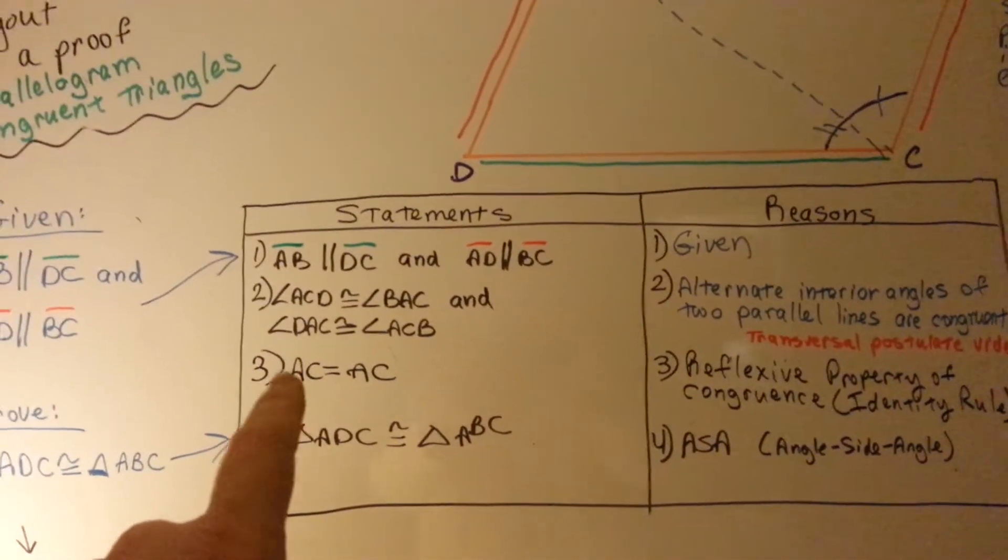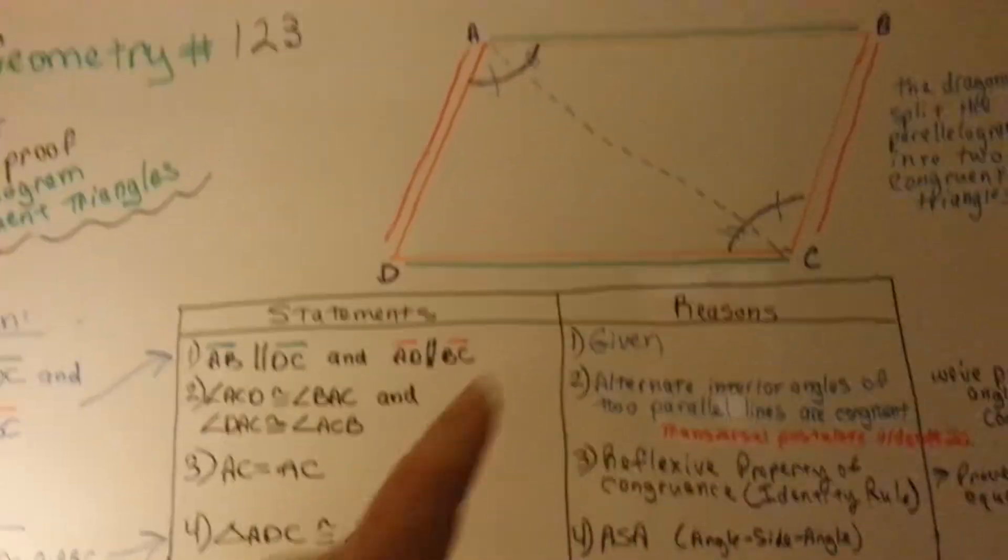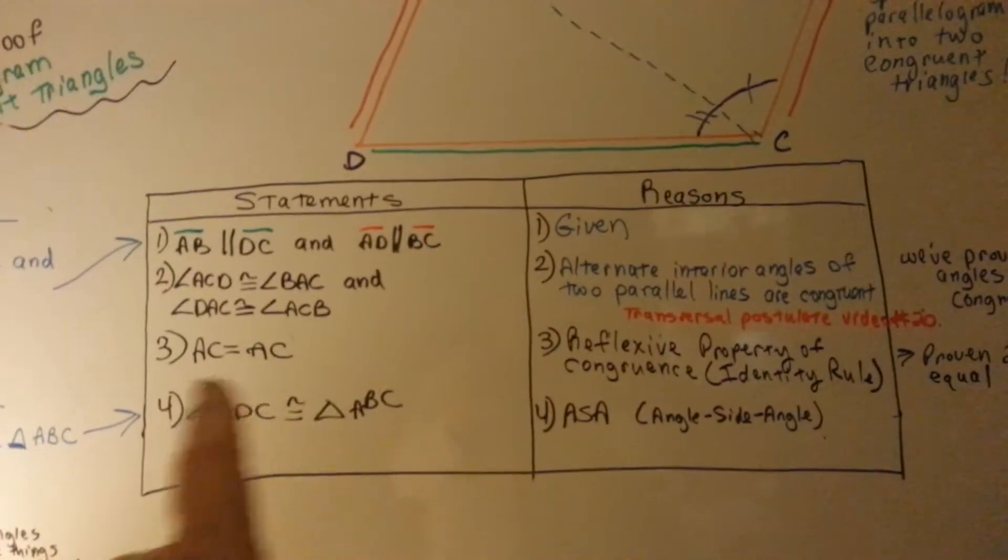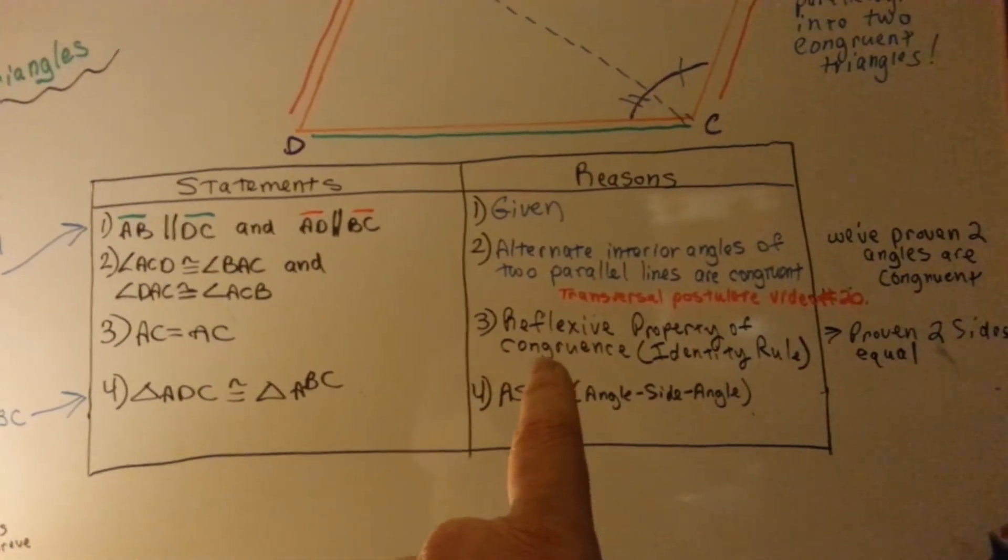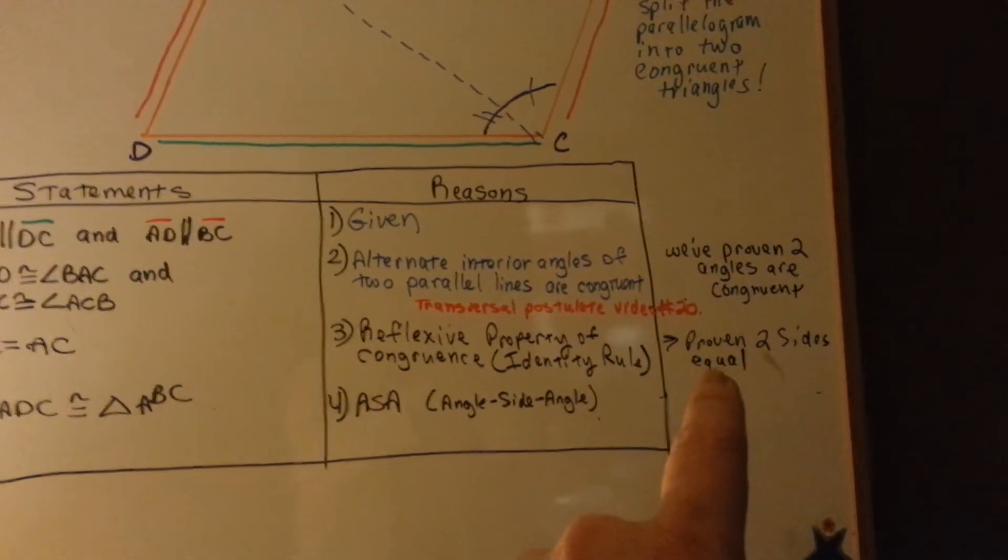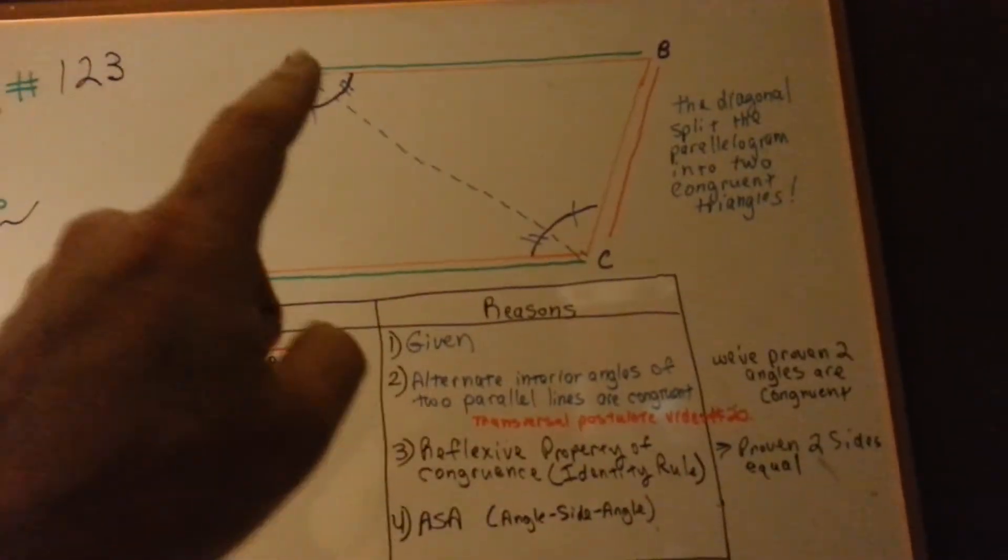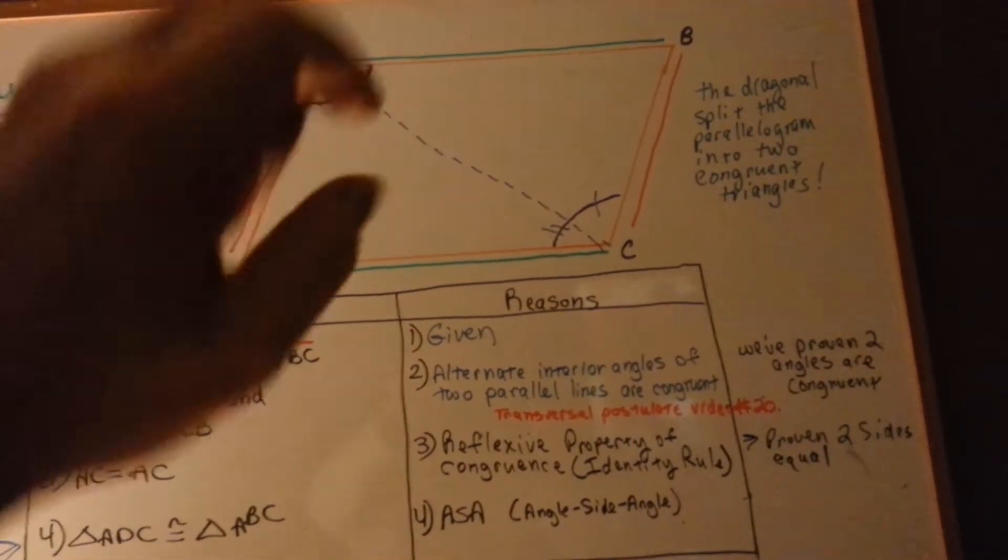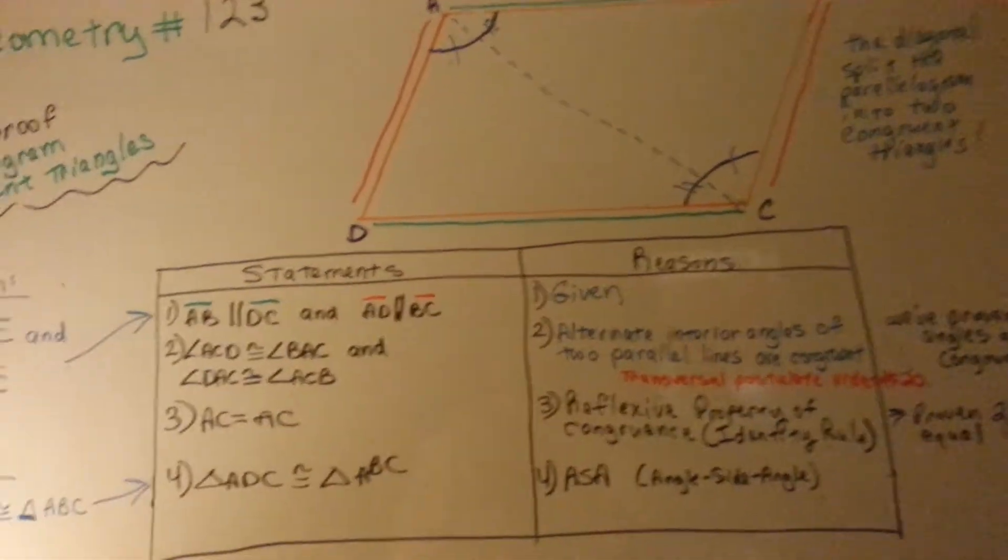So, now we're going to make a statement that AC is equal to AC because it's the shared line of the two triangles. Our reasoning is the reflexive property of congruence, the identity rule. Now, we've proven that two sides are equal. Even though that's one line, it constitutes the side of this triangle and the side of that triangle saying it's two lines. It's two sides.